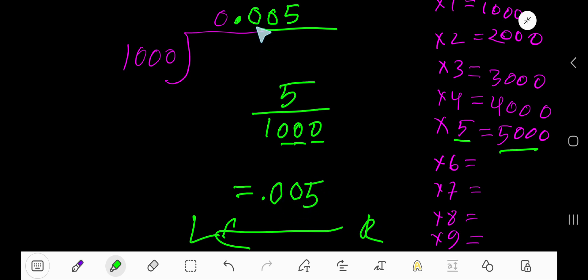0.005. Look, 0.005. You can also write this as 0.005. This leading 0 is used to indicate that the number is less than 1.